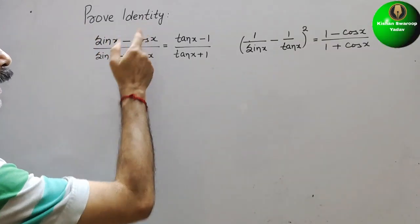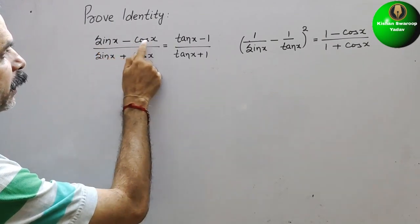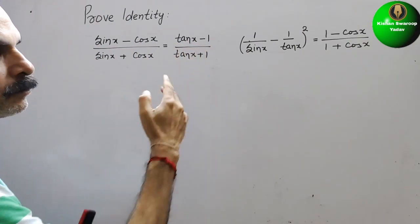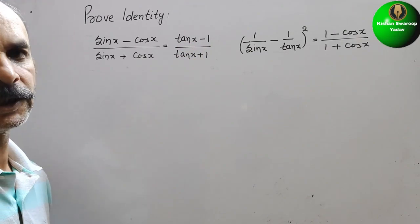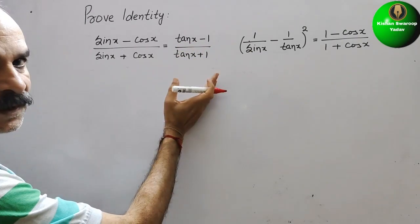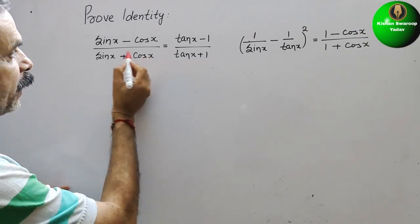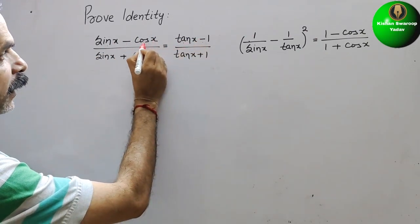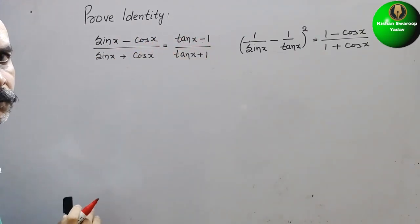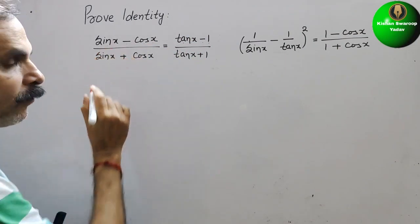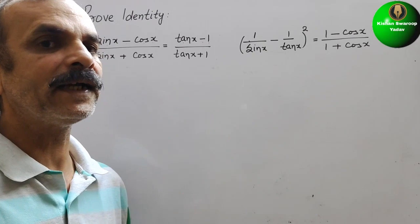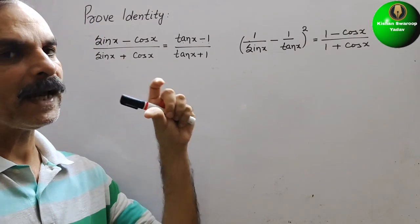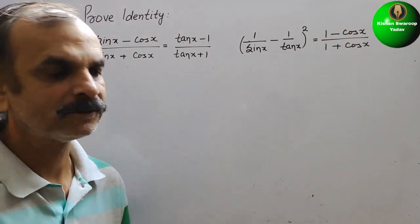The question is to prove an identity. What they have given is: (sin x - cos x)/(sin x + cos x) = (tan x - 1)/(tan x + 1). Now if you see the right side, sine is there, tan minus 1 is there, cos x is there, and they have written 1. That means we have to multiply and divide by cos x, or we can say divide numerator and denominator by cos x.